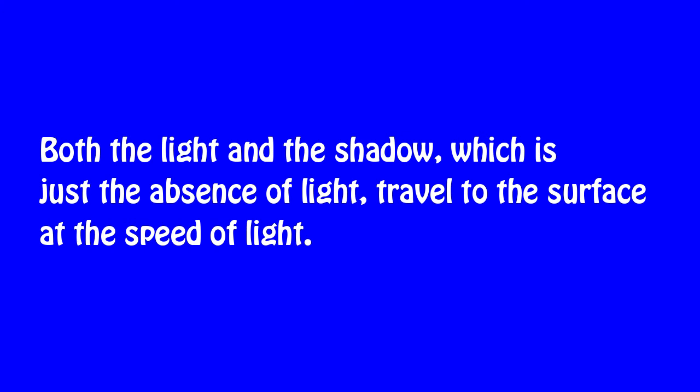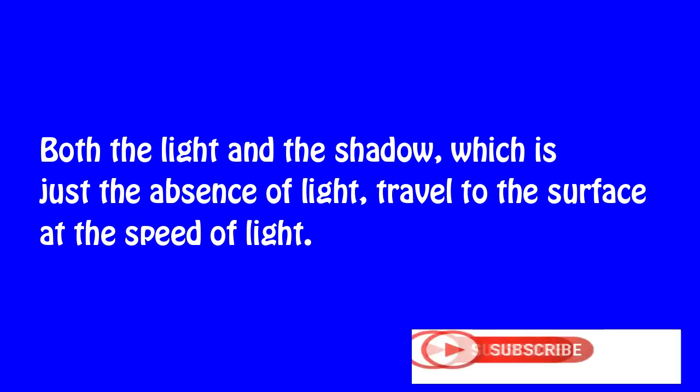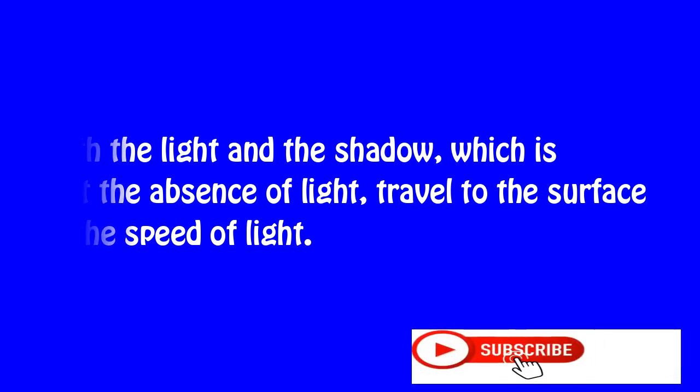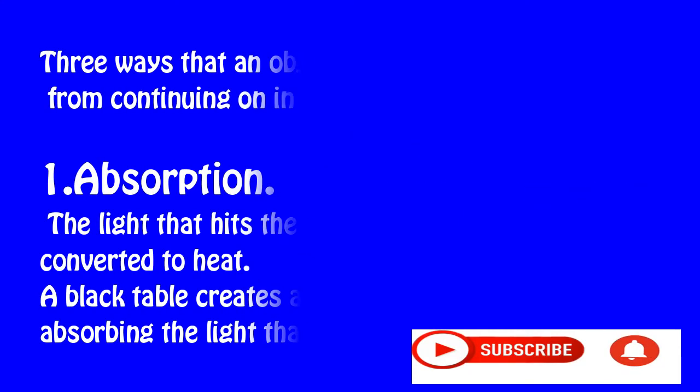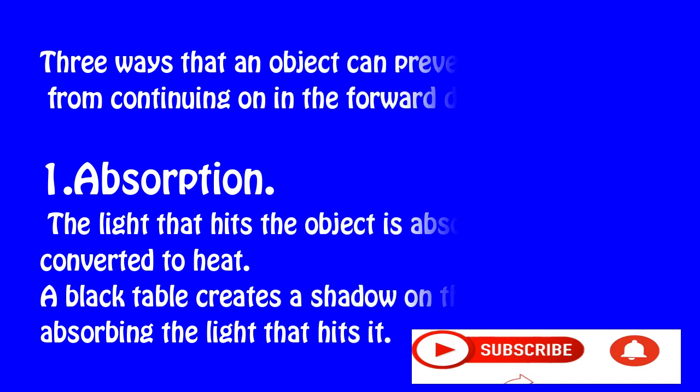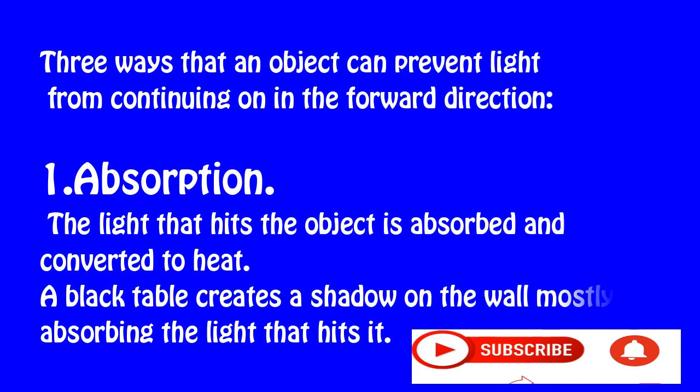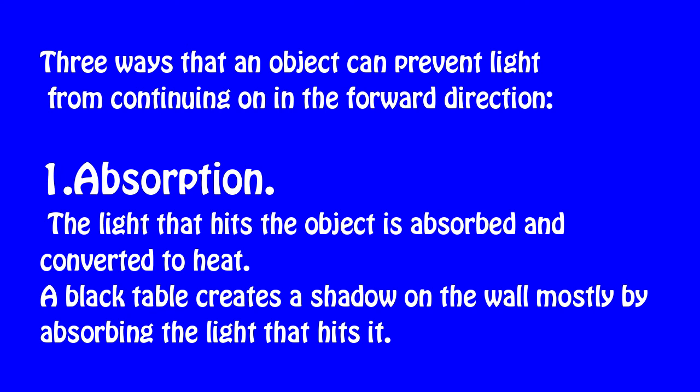Can air make a shadow? We proceed with our lesson. There are three ways that an object can prevent light from continuing on in the forward direction.